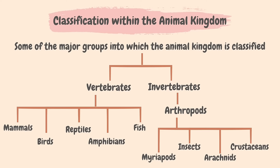So those were the five major groups of vertebrates, or animals with a backbone. Now let's learn about invertebrates — animals without a backbone. One of the characteristics used to further classify invertebrates is whether they have legs or not. Arthropods are a group of invertebrates that have jointed legs. There are four groups of arthropods: myriapods, insects, arachnids and crustaceans. Myriapods have bodies with many segments, and each segment has at least one pair of jointed legs. Examples of myriapods are centipedes and millipedes.